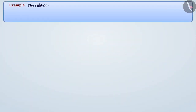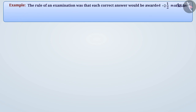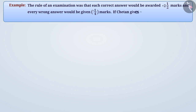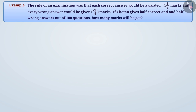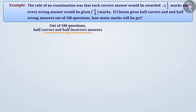The rule of an examination was that each correct answer would be awarded plus two and a half marks and every wrong answer would be given minus one by four marks. If Chetan gives half correct and half wrong answers out of hundred questions, how many marks will he get? That means he gave fifty correct and fifty wrong answers.